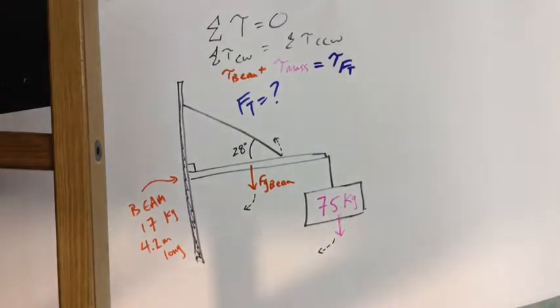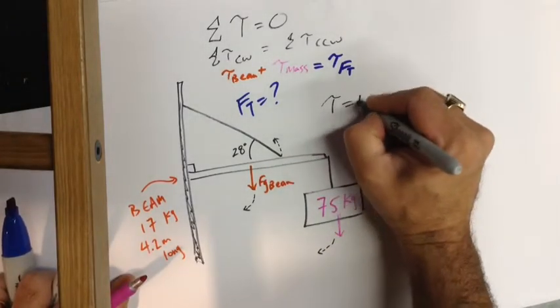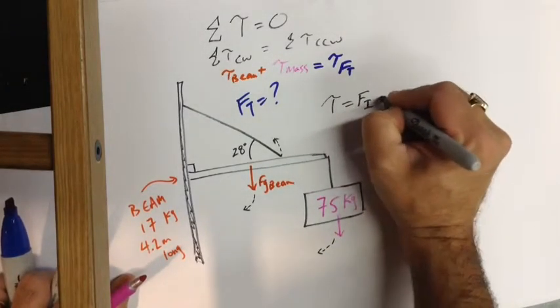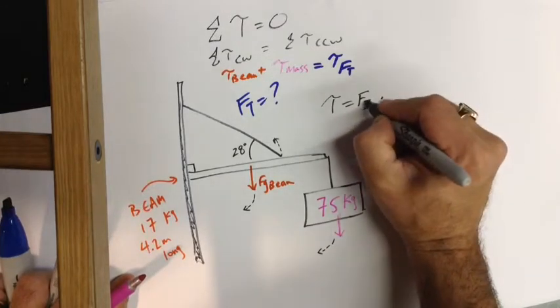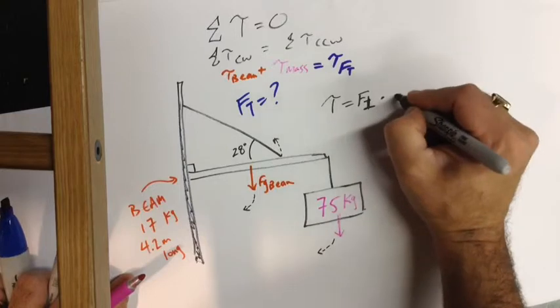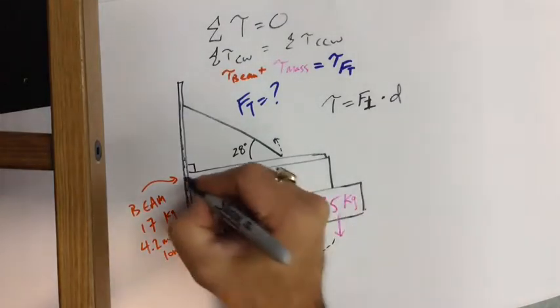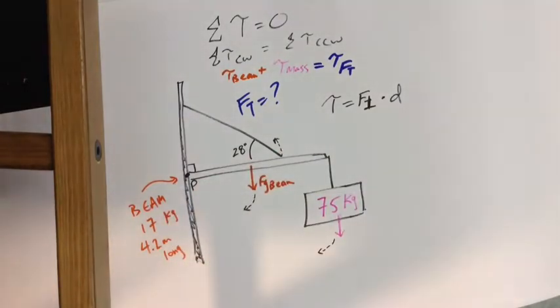For every element, we have to remember that torque is equal to our perpendicular force times the distance. And the distance is going to be from the pivot point to where the force is acting. So our pivot point is going to be over here. So for this particular question...